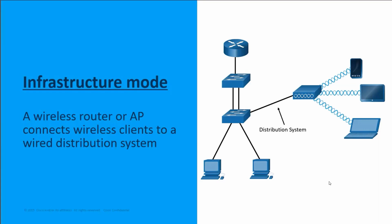In infrastructure mode, the wireless network connected to those wireless devices is hooked to a wired distribution system. That means our wireless router is connected with a wired Ethernet cable down into our infrastructure. Those switches carry that traffic on to the router and to the local PCs — you're connecting your wireless router with a wireless device, and that wireless router has a wired connection to your distribution system.